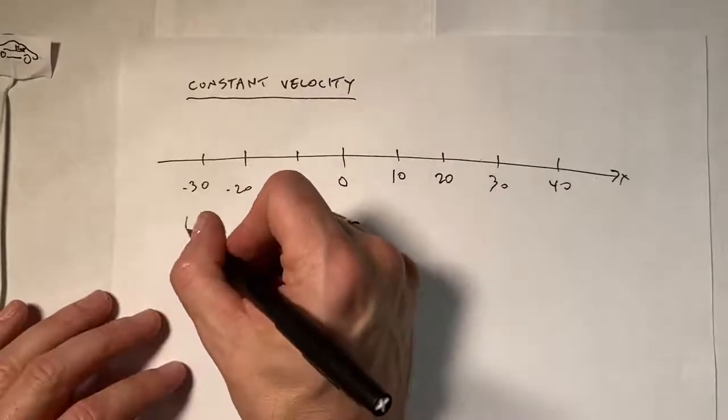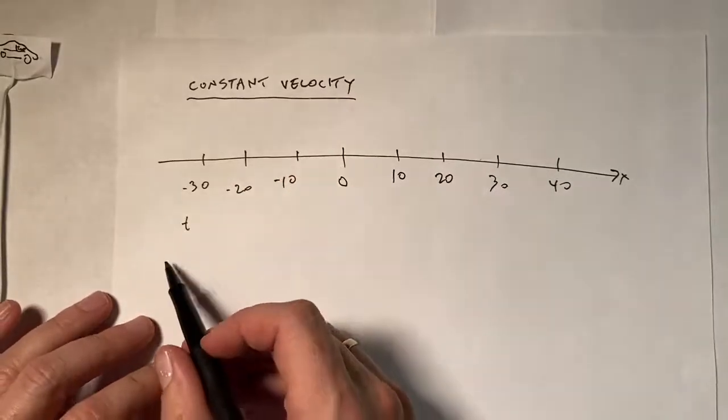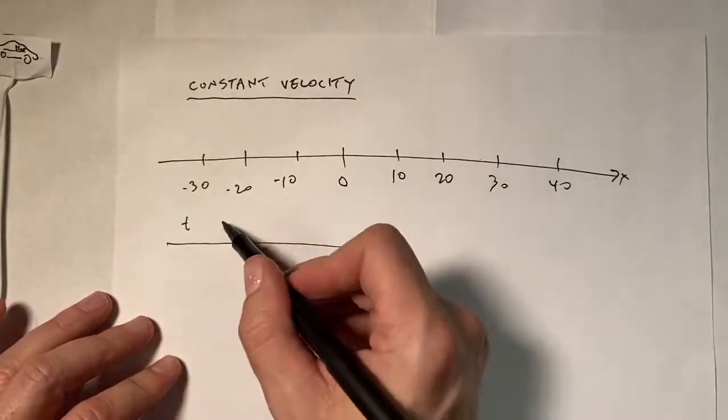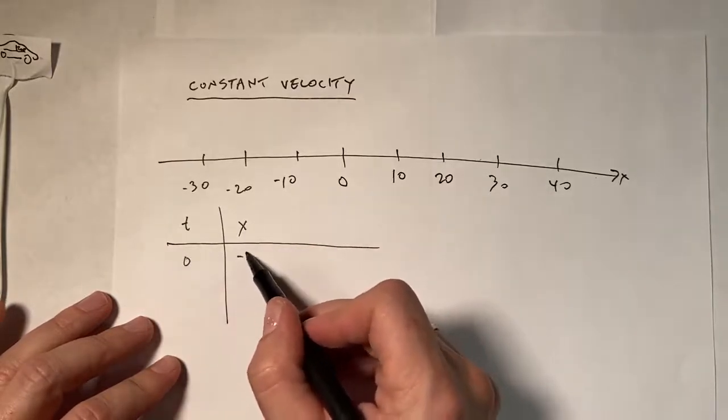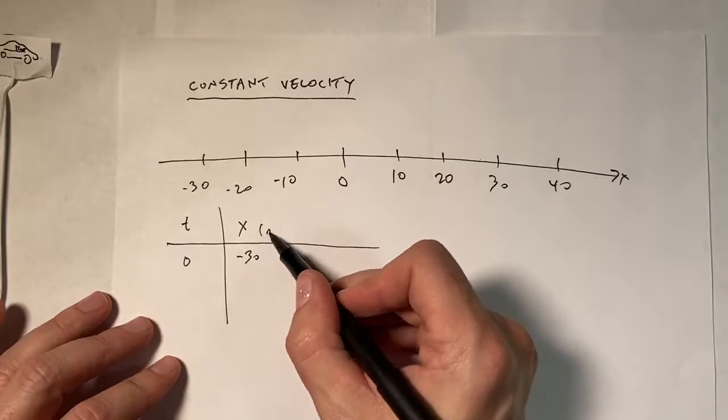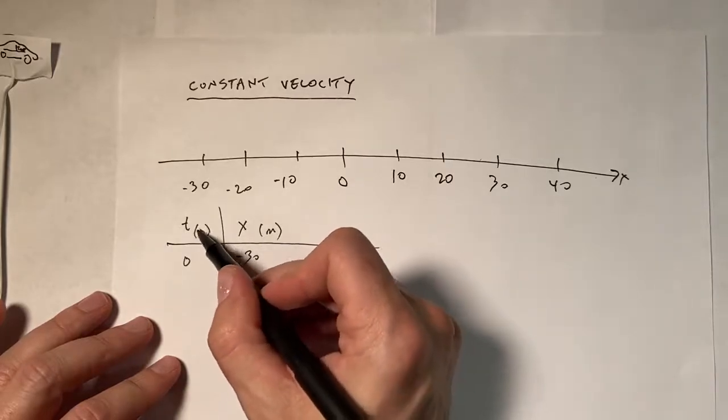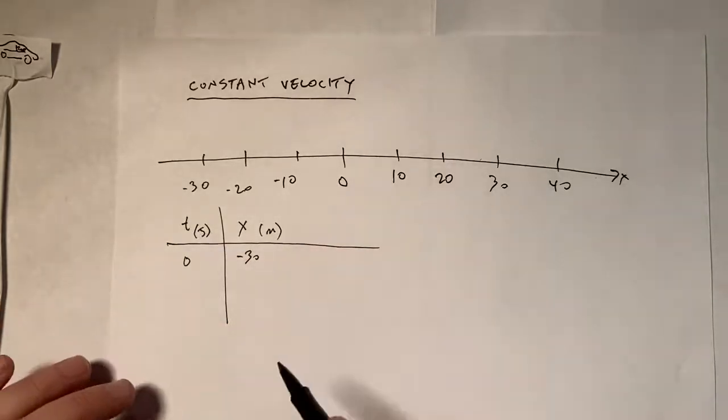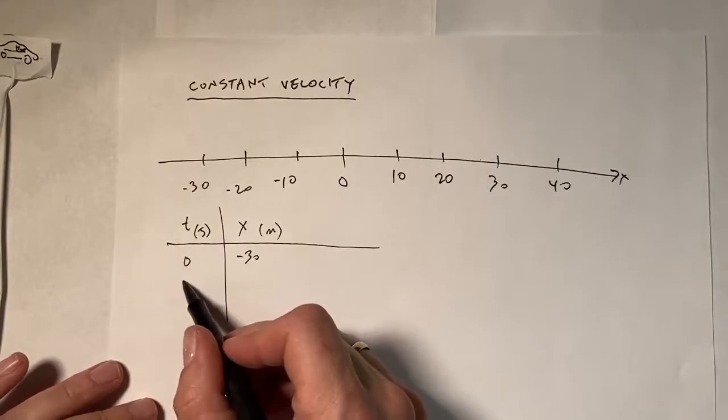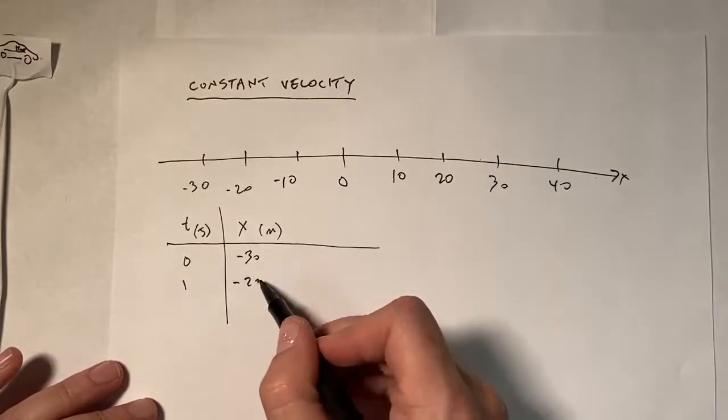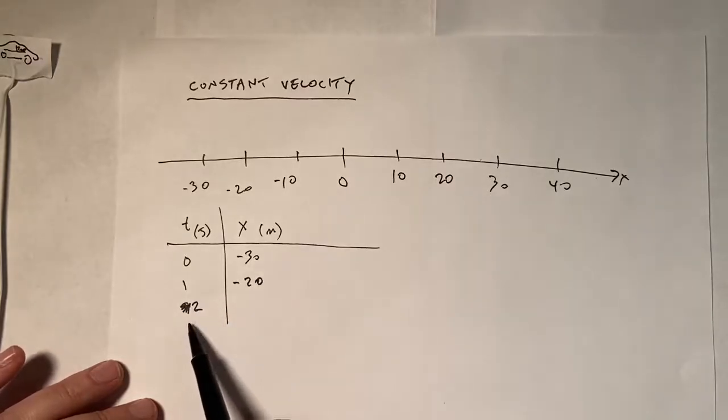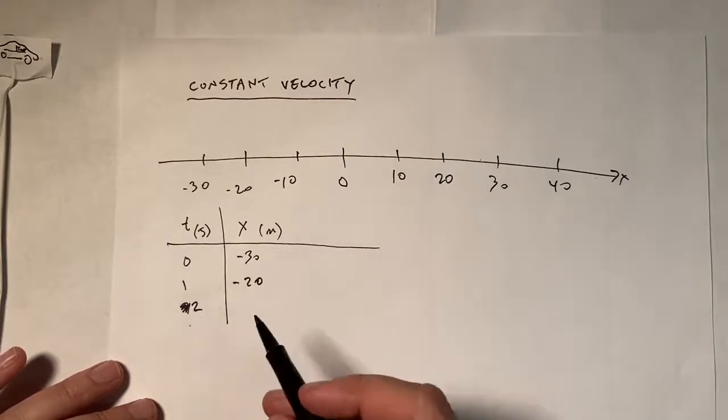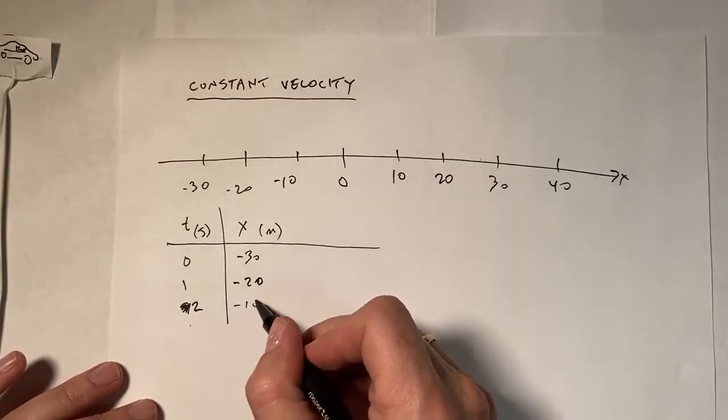Okay, so at t equals zero, let's make a data table. T, x. So zero, negative 30 meters. And this is in seconds. There are units, and units do indeed matter. And then we're at one second, negative 20. And then we have two seconds. I do make mistakes, and it's okay to make mistakes. Just scratch it out. No big deal.